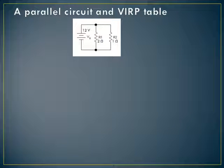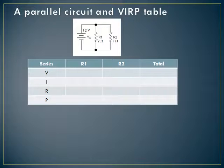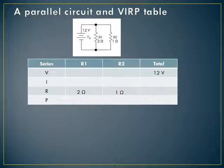Now let's go through the same process for a parallel circuit. I'm going to use the same battery and the same two resistors — 1 ohm and 2 ohm — so we can see how this looks different. Here's your VERP table set up the same way: R1, R2, and total. I'll start by putting in the values: R1 is 2 ohms, R2 is 1 ohm, and the total voltage is 12 volts.